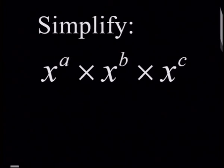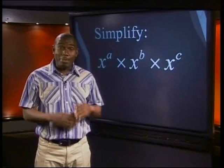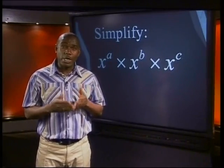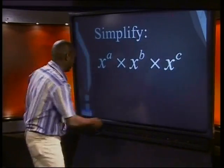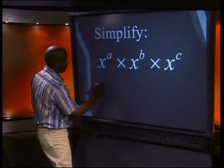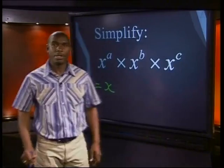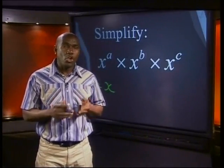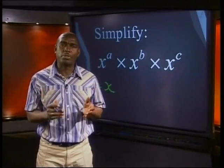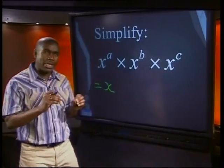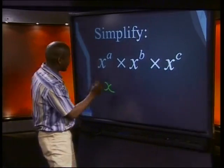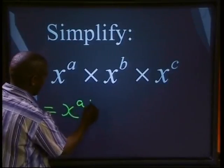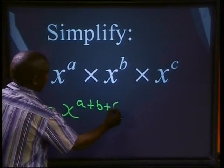Now how about simplifying this one? x to the power of a, multiplied by x to the power of b, multiplied by x to the power of c. The bases are all x, so we add the exponents. Let's put down the base x. What is the exponent going to be? Is it a times b times c? No, you can't multiply the exponents — be careful. You must add a, b, and c. So in this case, it will be x to the power of a plus b plus c.